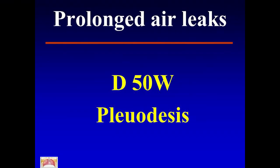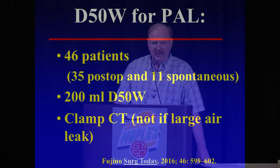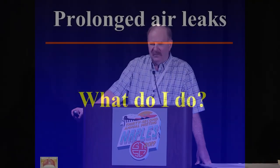D50 is not widely known for pleurodesis, but there are a couple of papers on it. A study from Japan looked at 46 patients — 35 post-op and 11 spontaneous pneumothorax. They gave 200 ml of D50 and clamped the chest tube, as long as the air leak was not too large — if too big, the patient would develop tension pneumothorax. It was pretty effective in appropriate patients.